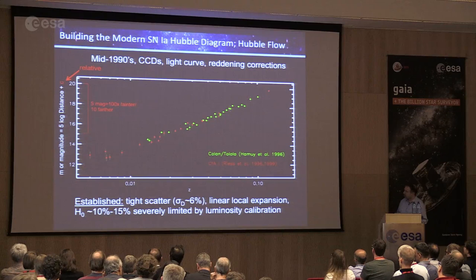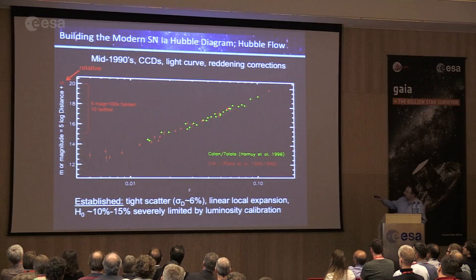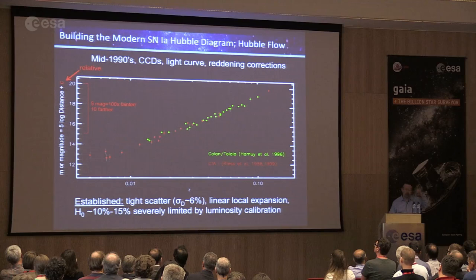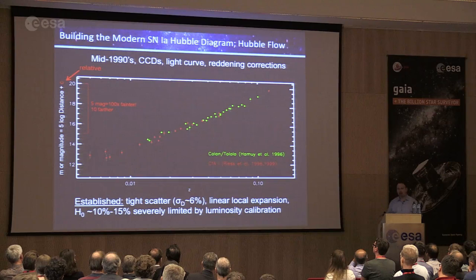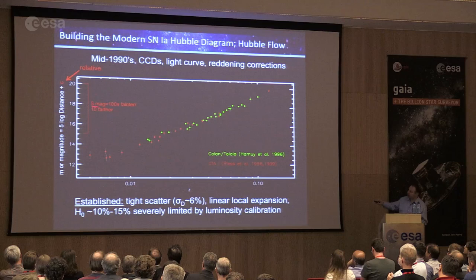We can measure the relative distance of supernovae even without measuring parallax or calibrating true luminosity. For physicists nervous about 'magnitude': five magnitudes is a factor of 100 in brightness, or a factor of 10 in distance.